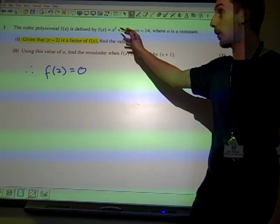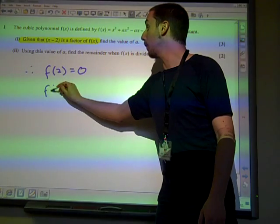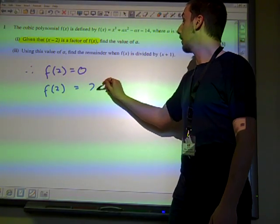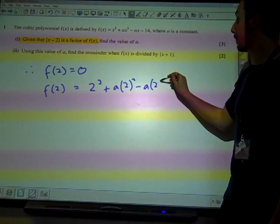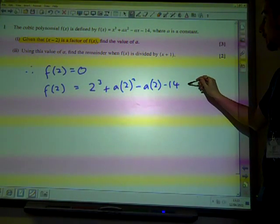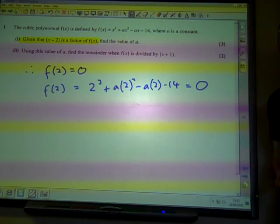So we're going to sub 2 into our equation. f of 2 is 2 cubed plus a times 2 squared minus a times 2 minus 14. So that equals 0.